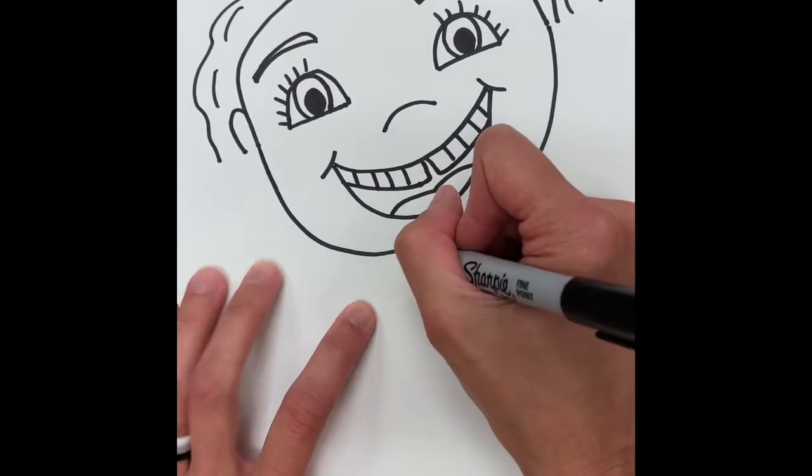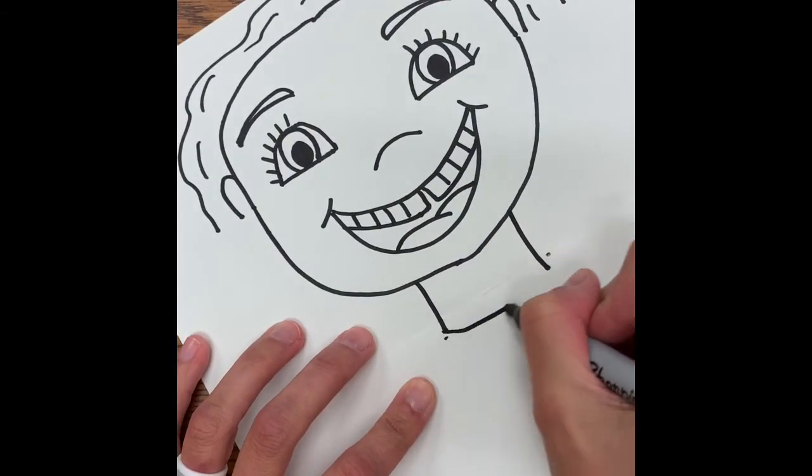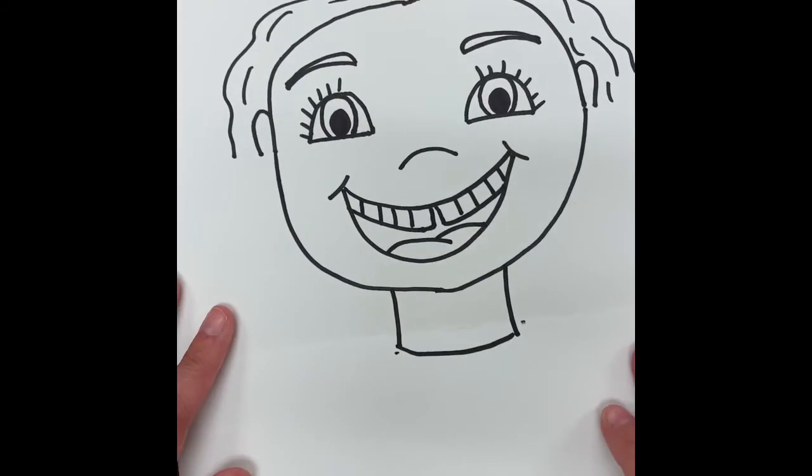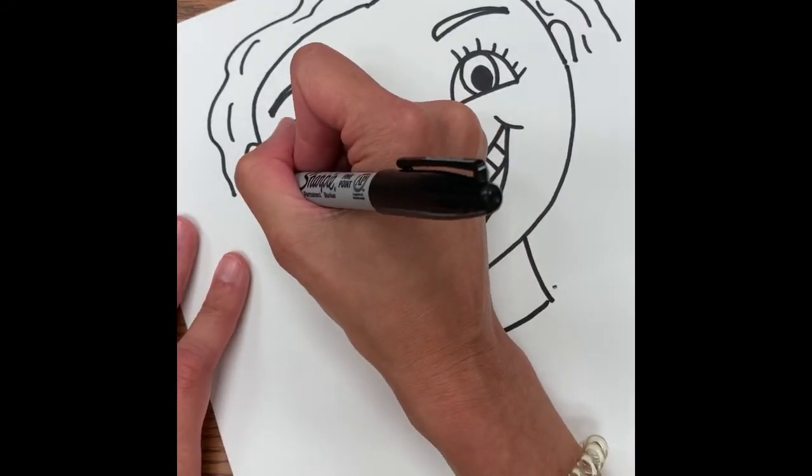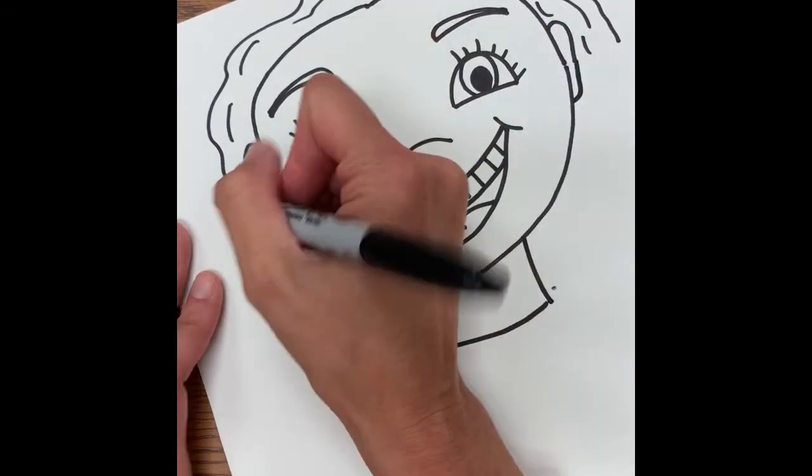Okay, again, I'm going to draw my neck so I don't have a floating head. This time I'm going to go ahead and draw the bottom part of my neck. And then I'm going to finish my ears off and my hair.